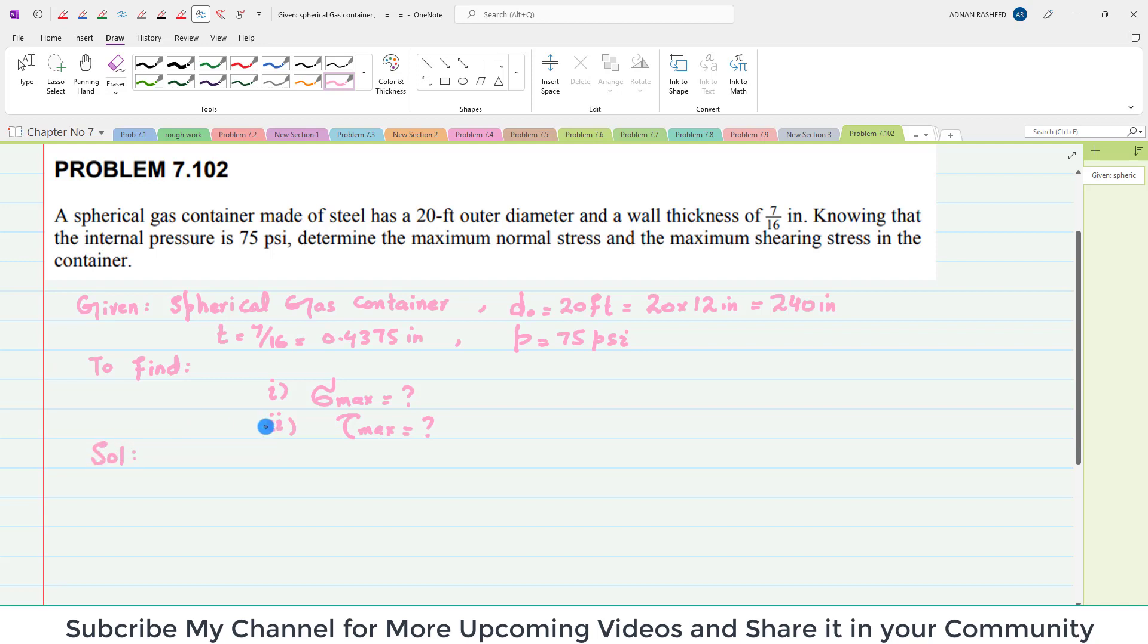As we know, the working stress sigma max equals sigma 1 equals sigma 2 equals PR/(2T) for a spherical pressure vessel. So I will write it.